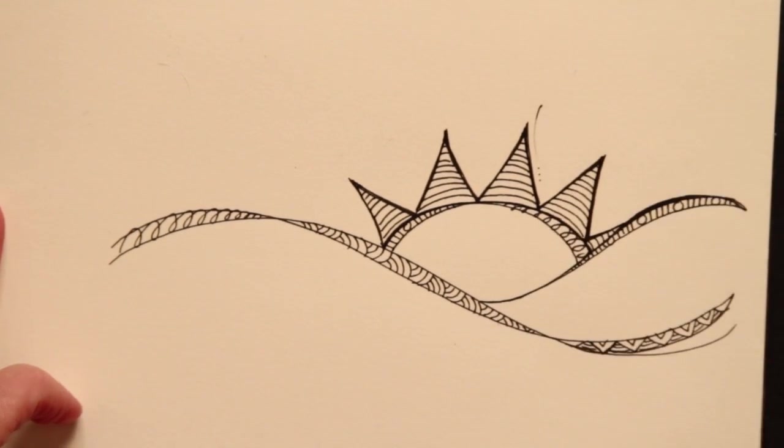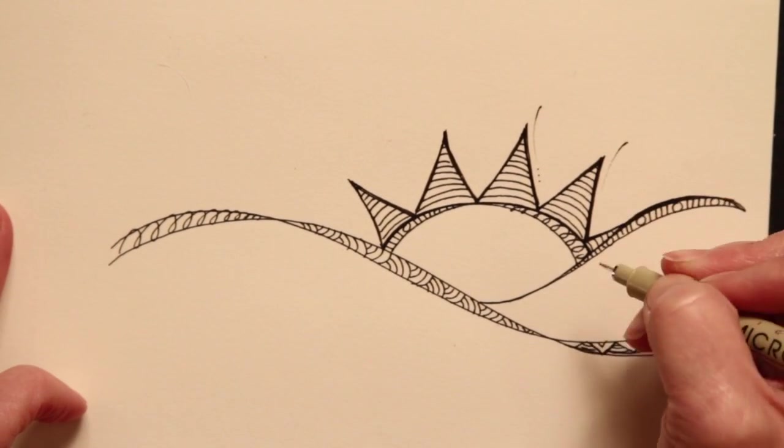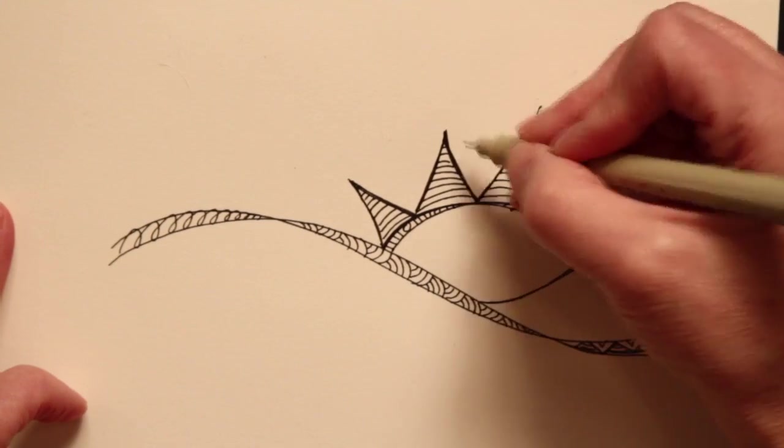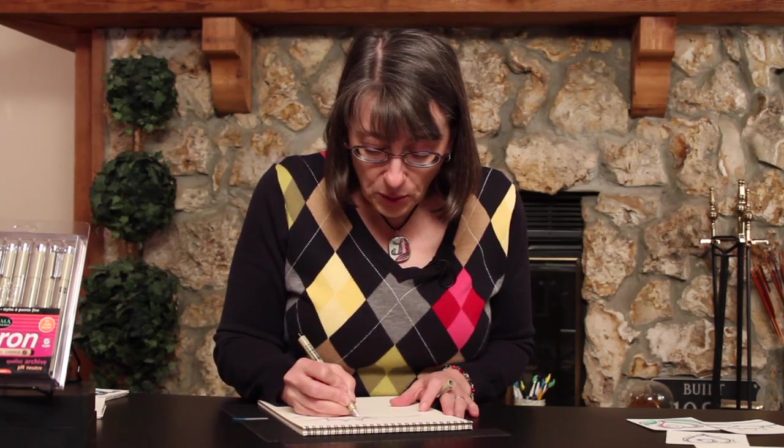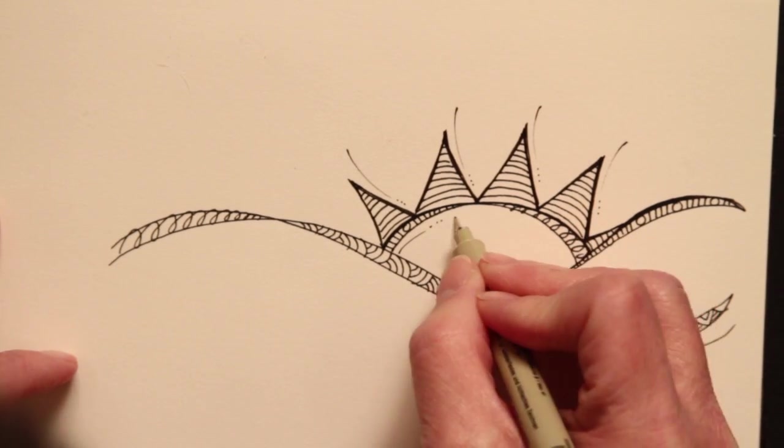And then I like to add some motion. And I do this by doing a really fast stroke and then three little dots. And that just adds a whole lot of life to the piece. You can also do that inside the sun.